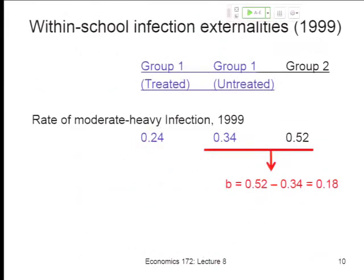If we compare the untreated in group one to the controls in group two, basically none of them got treated — or very few, a couple percent privately went and got the drugs. We see a difference of about 18 percentage points — some indication that just being in a treatment school near people getting treated benefited these folks' health. This is evidence for a positive spillover. The additional gain from being treated yourself is about 10 percentage points.